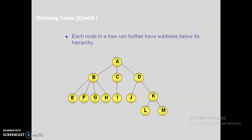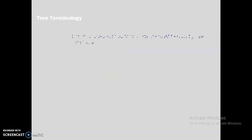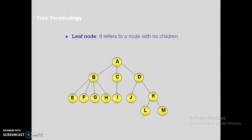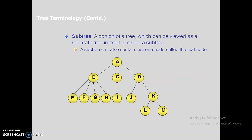Each node in a tree can further have subtrees below its hierarchy. A leaf node refers to a node with no children — the terminal nodes. Here E, F, G, H, I, J, L, and M are leaf nodes. A subtree means a portion of a tree which can be viewed as a separate tree in itself. A subtree can also contain just one node, called the leaf node.